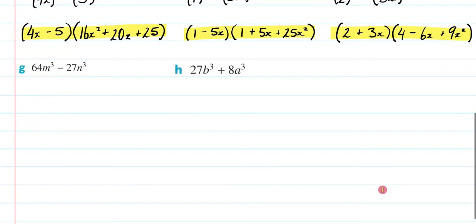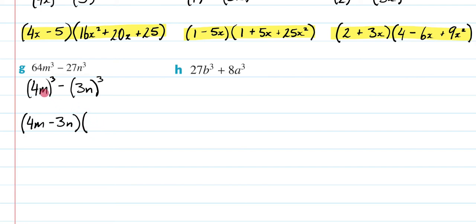Last two. We're nearly there. So now what I'm going to do here, 64, once again, is going to be 4 cubed. So it's going to be 4m cubed minus 27 is going to be 3n cubed. Then look, I'm not looking at it anymore. So we're just going to do it by heart. We know that when it's going to be a negative, it's going to be 4m minus 3n. Then it's going to be 4m squared, so 16m squared plus 4 times 3 is 12mn. Then it's going to be 3n squared plus 9n squared. Close that bracket.